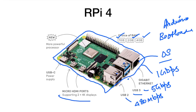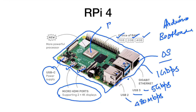We have micro HDMI ports supporting two 4K displays, and a USB-C power supply. USB-C is now gearing up in the mobile phone market. This board also features the most powerful processor, the Broadcom BCM processor, based on ARM controllers.